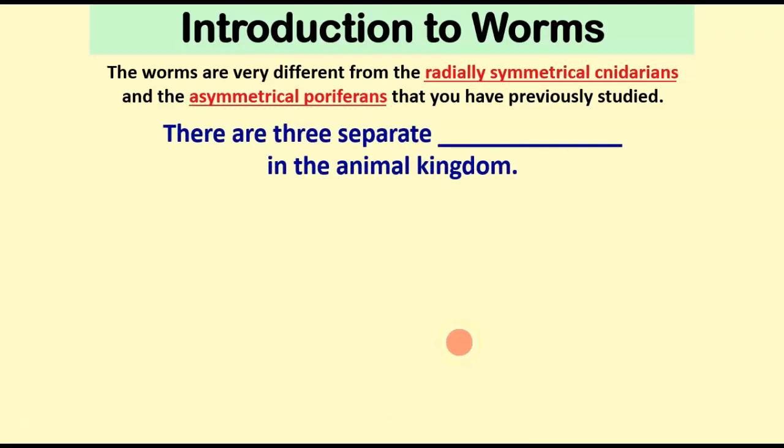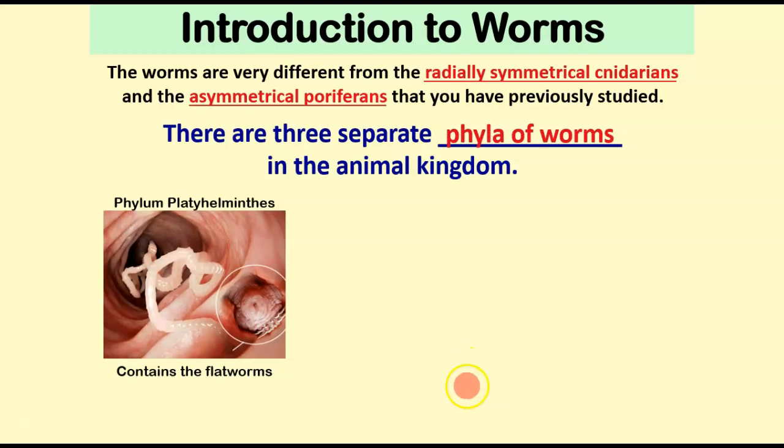Now, there are three separate phyla of worms. First, there's the phylum Platyhelminthes, and this is the flatworms. And we'll be focusing tomorrow on the flatworms specifically. A lot of these guys are parasites, and parasites, depending on your opinion, can be either really cool or really terrifying. This picture right here is a type of flatworm called a tapeworm.